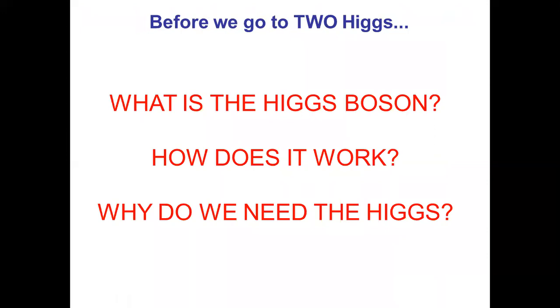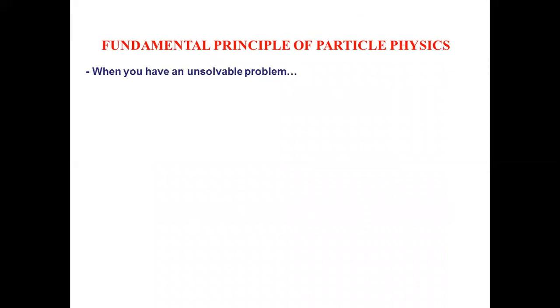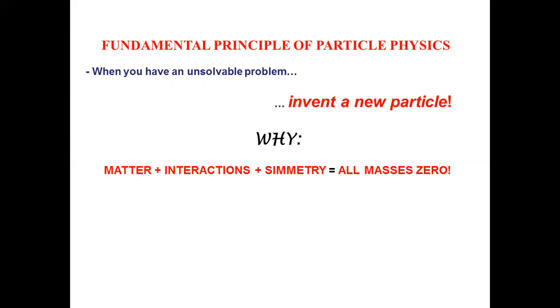Before we go to two Higgs and more than one Higgs, what is the Higgs boson? How does it work and why do we need it? These obey the fundamental principle of particle physics: when you have a problem you cannot solve, nine times out of ten, you just invent a new particle. It worked with antimatter, it worked with neutrinos, and it worked with the Higgs boson.